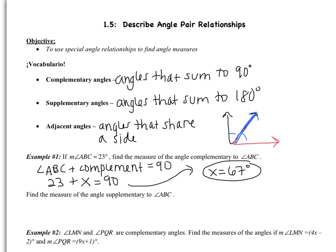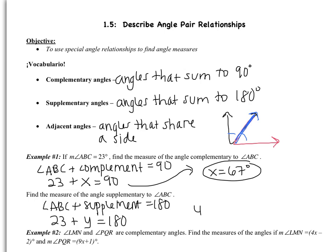Now find the measure of the angle that's supplementary. Supplementary angles add to be 180. So if I take ABC and add the supplement, the sum should be 180. I'll take 23 and call the supplement Y because these are two different angles. They add to be 180. Subtracting 23 from both sides, I get the supplement to be 157 degrees. Always make sure to put the degree sign because angles are measured in degrees.